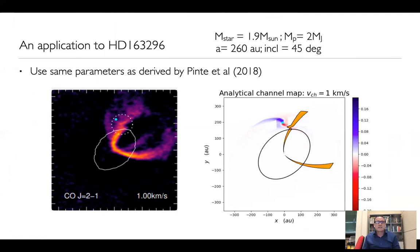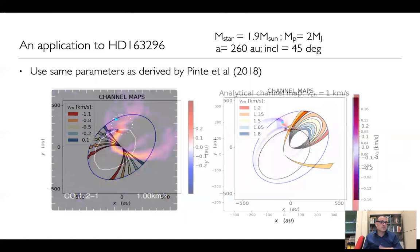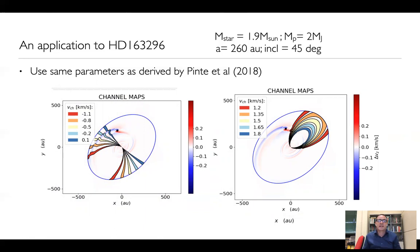An application of this theory to the case of HD 163296 can be done. This is the famous case by Christoph. What I show here is on the left, the actual observation, and on the right, our model, where we put the planet according to the planet properties that have been derived by Christoph and collaborators. And we indeed see that there is a very nice comparison between our analytical model and the observations. And I can also show all the other channel maps that we obtain in this case.